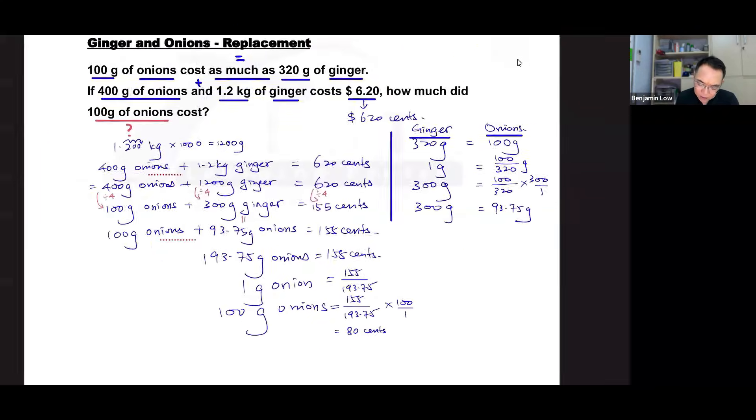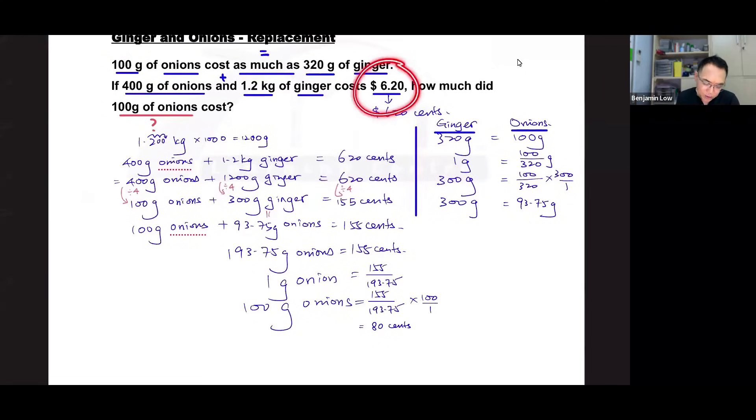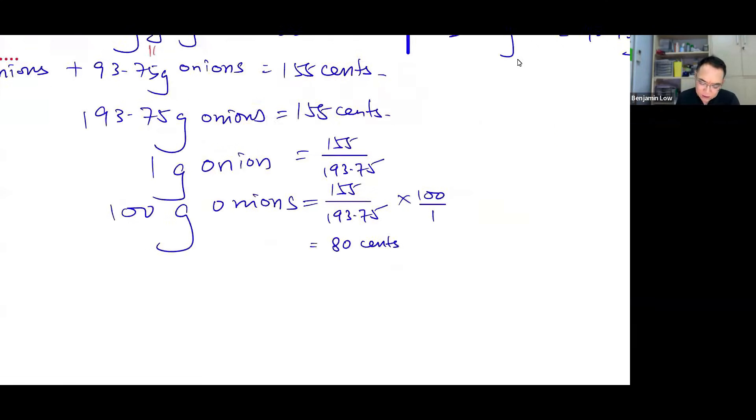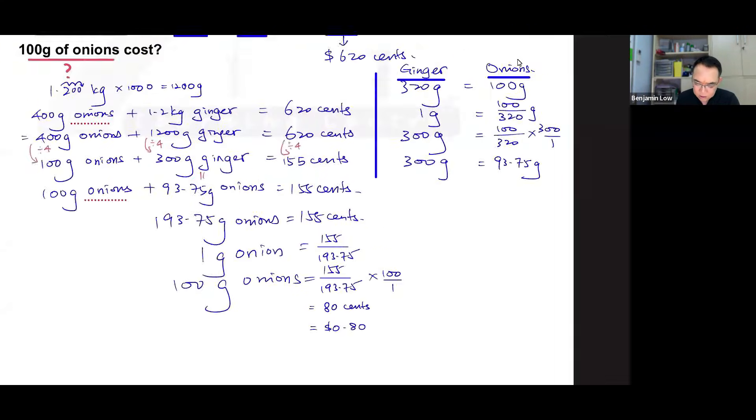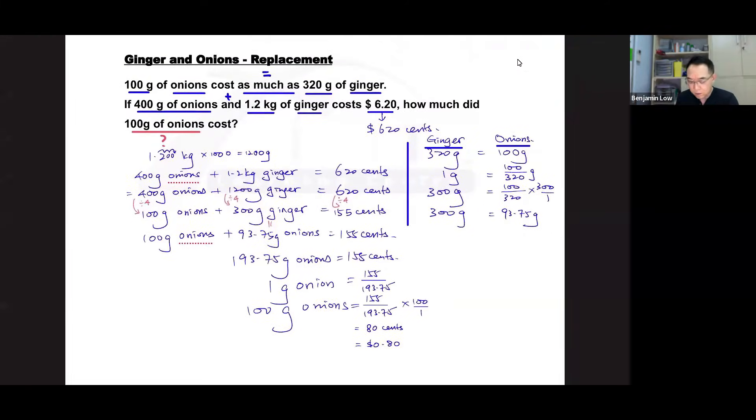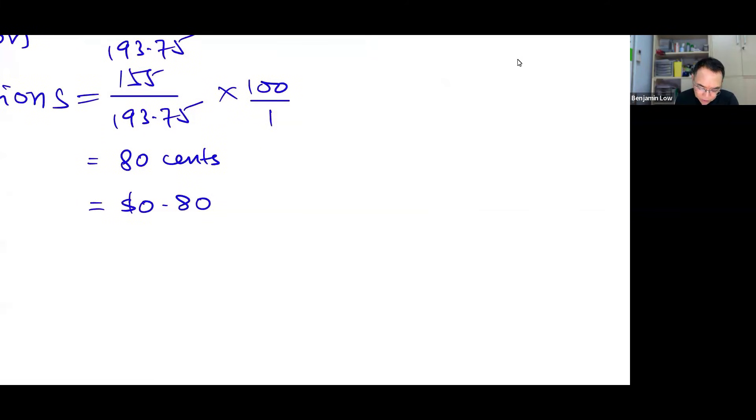And since we started the question with dollars and cents, we probably want to change it back. So 80 cents is $0.80. And by the way, if you are going to write in cents, just a reminder, you are not allowed to write 0.8 like this for money. You must have two decimal places. Remember that.